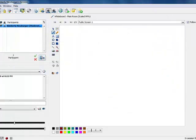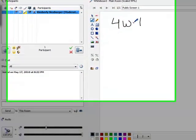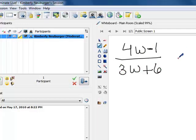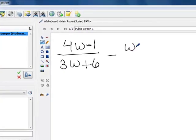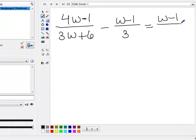So let's say that we are dealing with the problem 4w minus 1 over 3w plus 6 minus w minus 1 over 3 equals w minus 1 over w plus 2.